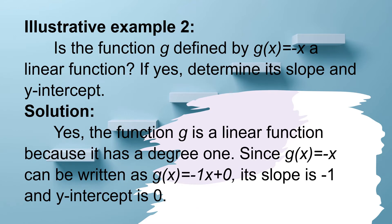Example number two: Is the function g defined by g of x equals negative x a linear function? If yes, determine its slope and y-intercept. Yes, the function g is a linear function because it has degree 1. Since g of x equals negative x can be written as g of x equals negative 1x plus 0, its slope is negative 1 and the y-intercept is 0.